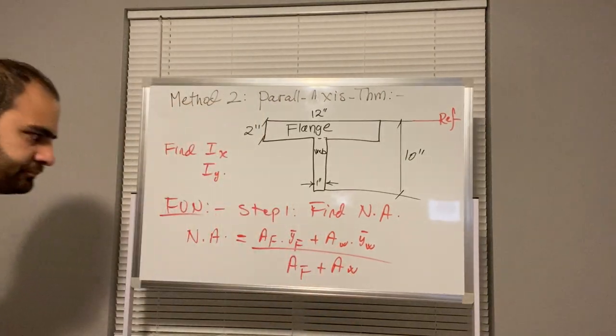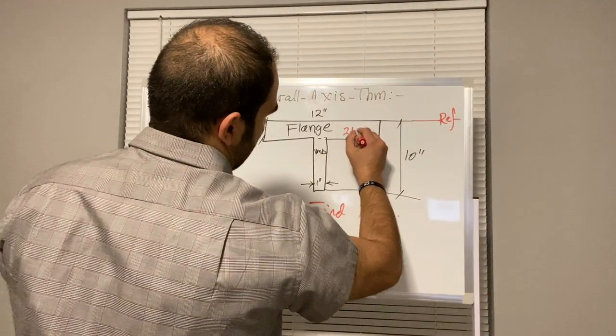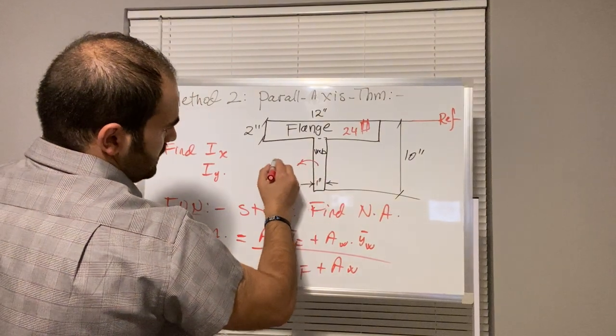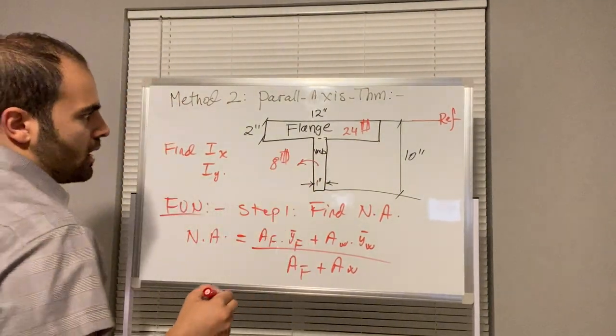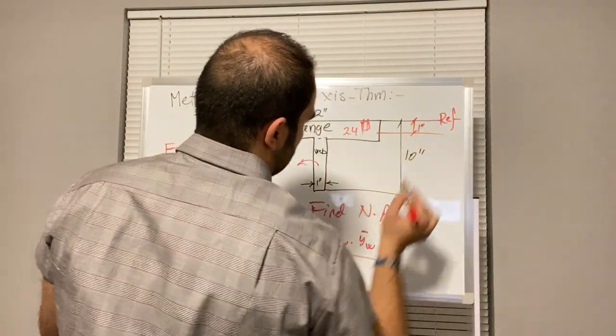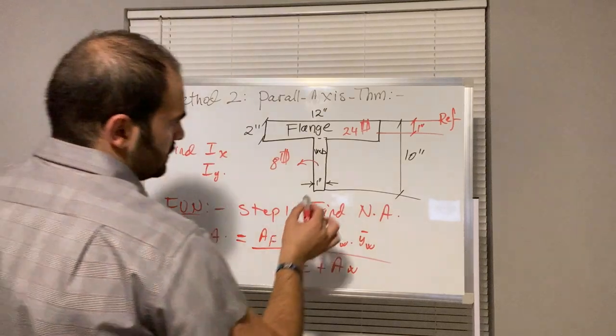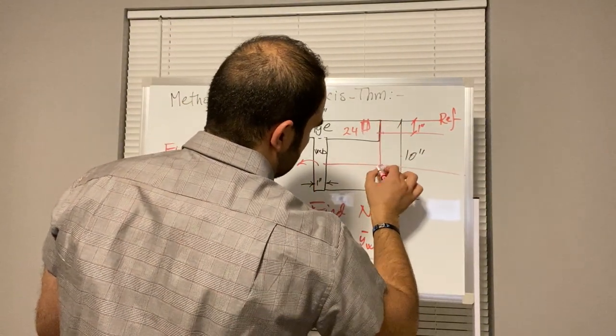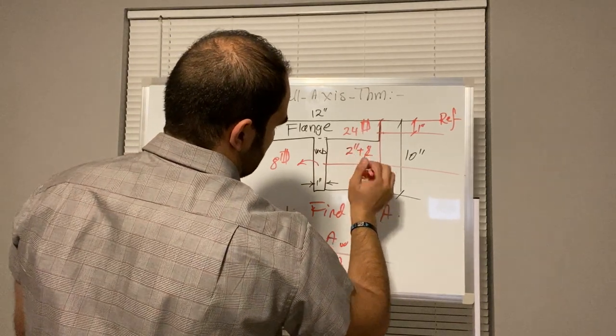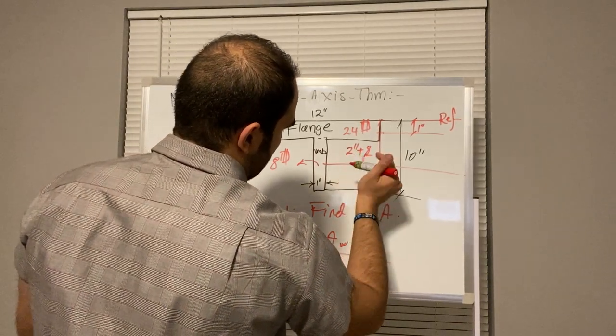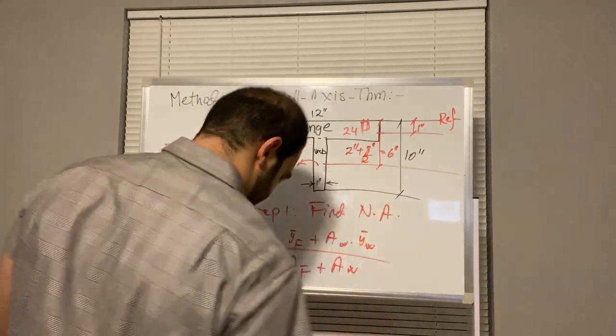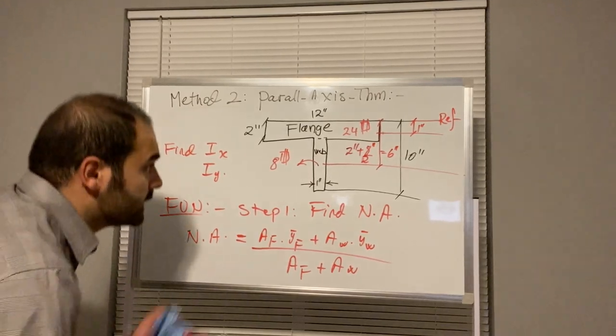Right? Area flange is 24 inches squared. Area web is 8 inches squared. Reference is this, neutral axis is 1. And that is your second one, which is 2 plus half of 8. Not 4, excuse me. So that is what, 6 inches.